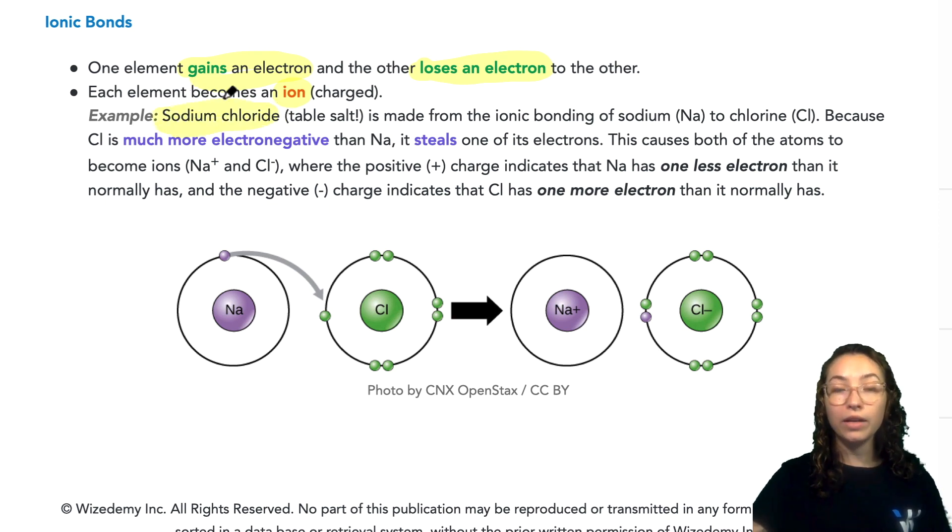Sodium chloride is NaCl, so we have sodium and chloride here, and it results from the ionic bonding of these two elements. Chloride, or chlorine, is much more electronegative than sodium, and so it steals one of its electrons.